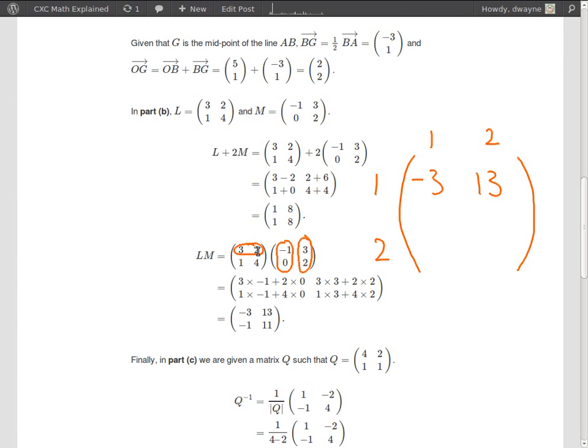To get, let me clear this. And this. To get the second, sorry, to get the entry in row 2, column 1.